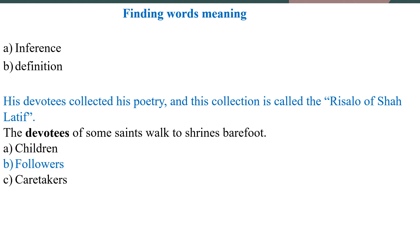پہلا طریقہ inference کا ہے — یعنی اندازہ لگانا۔ اگر آپ اس جملے کو غور سے دیکھیں تو devotees نے ایک خاص کام کیا ہے: انہوں نے poetry کی ایک کتاب باقاعدہ تشکیل دی ہے، جس کے پیچھے ان کی محبت جھلکتی ہے۔ دوسرا sentence ہے: 'The devotees of Shah Latif walk to the shrine barefoot' — یعنی وہ ننگے پاؤں چل رہے ہیں، جو کسی جگہ کے لیے خاص respect ظاہر کرتا ہے۔